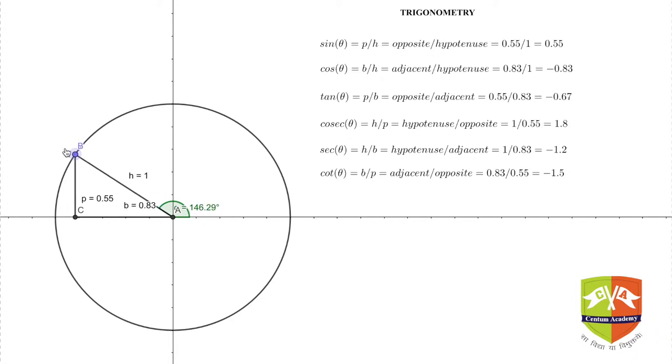As theta is increasing, some of the values are now negative. You can see cos θ is negative, tan θ is negative, sec θ and cot θ are negative. Why? Because in this case B has gone negative because it is on the negative x-axis.